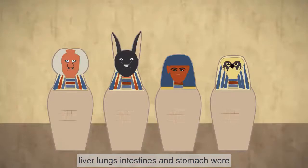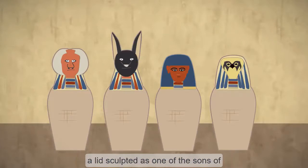The liver, lungs, intestines, and stomach were kept and placed in four canopic jars, one for each organ. These jars each featured a lid sculpted as one of the sons of Horus.